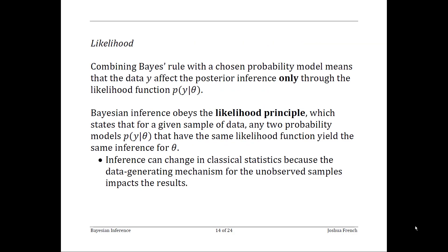A last detail: a claimed advantage of Bayesian statistics is that it obeys something called the likelihood principle, which essentially states that if two samples of data have the same likelihood function, they should yield the same inference for theta. In frequentist statistics, the process that generates the data directly affects your inference for theta, even if two processes have the same likelihood — for example, a negative binomial and binomial distribution with the same likelihood would still have different means and different confidence intervals. Bayesian statistics does not have that property: as long as two models have the same likelihood function, they should have the exact same statistical inference. I'm not actually convinced this is an advantage, but it is a nice property to point out.